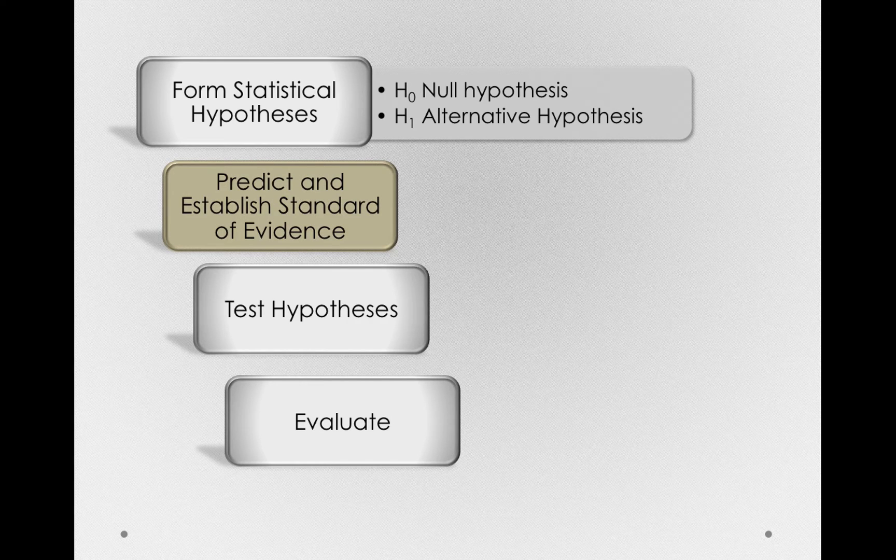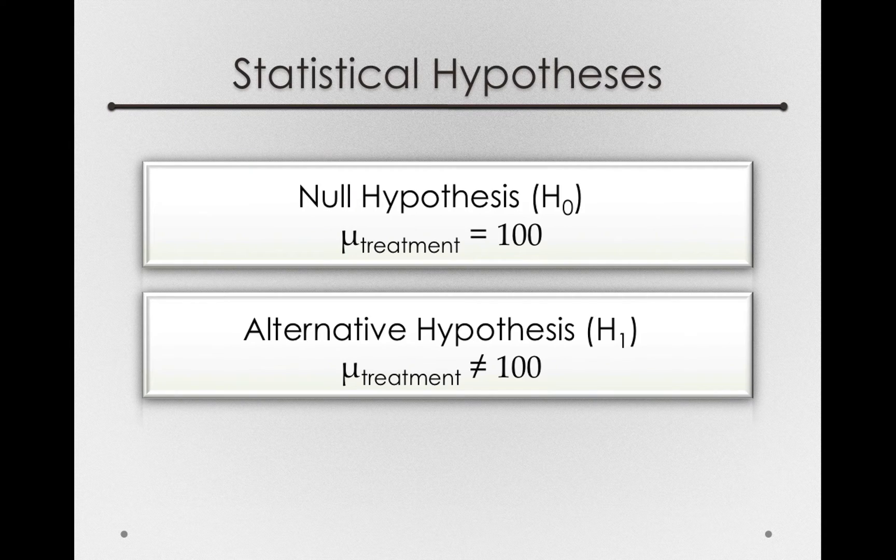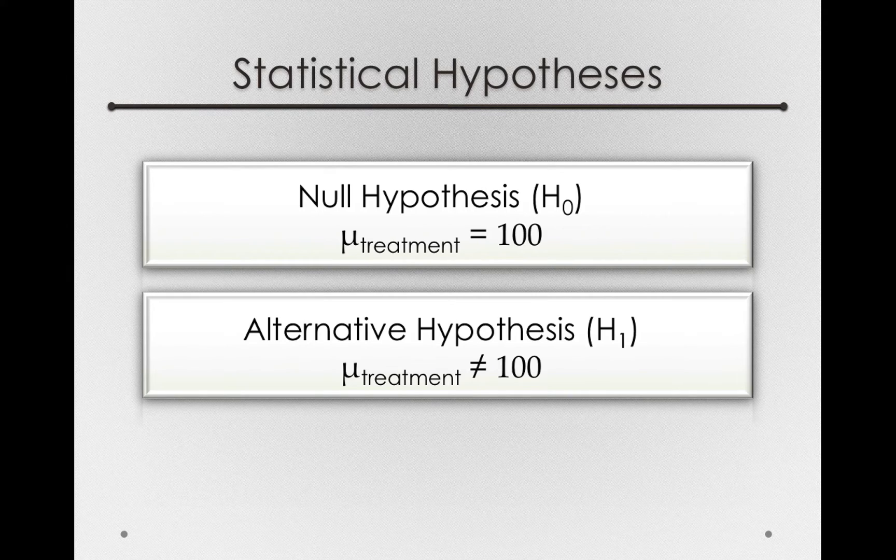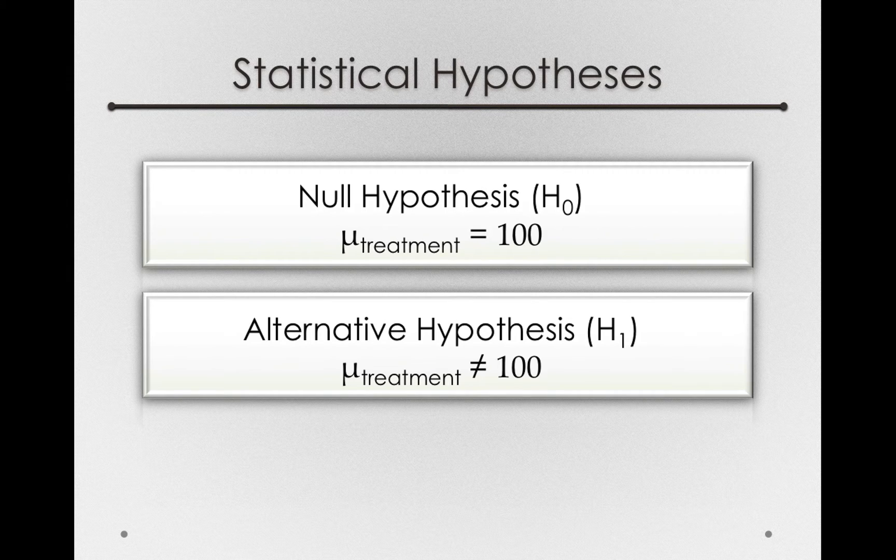Our next step will be predicting and establishing a standard of evidence. Specifically, we'll use one of these hypotheses to make predictions of what sample means would reasonably happen if only sampling error alone was acting.